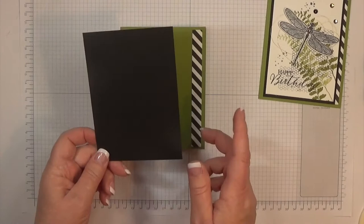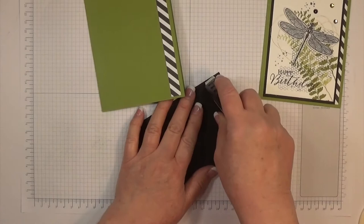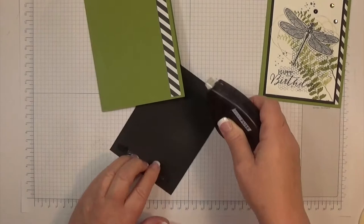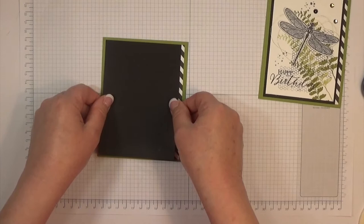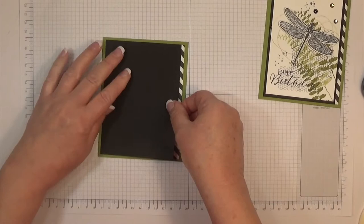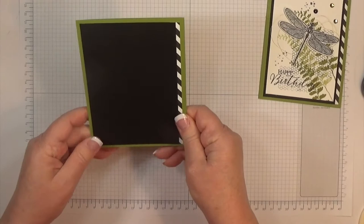I've just adhered that to the front of the card. Now I'm going to take a piece of basic black, three and three fourths by five and a fourth, and put it on the card front. The adhesive I'm using today is Fast Fuse. Doesn't take very much adhesive and it stays forever. The applicator is a little tricky to get used to, but once you get used to it, it's awesome.